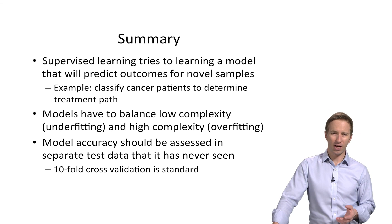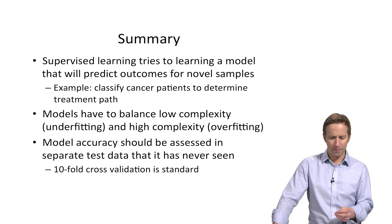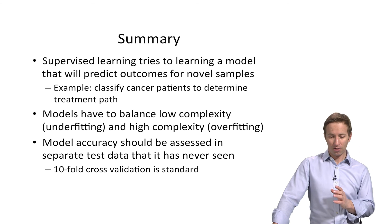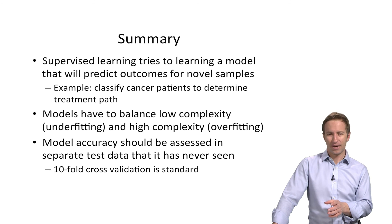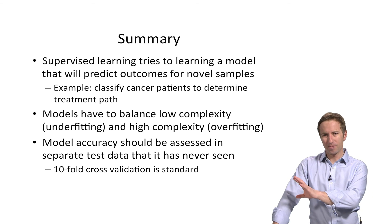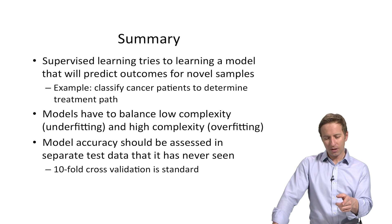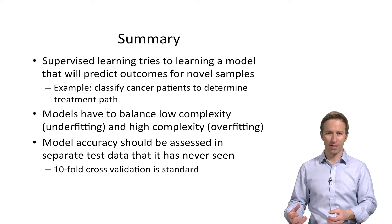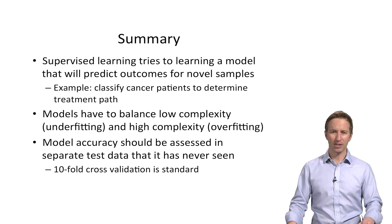And then finally, the accuracy should be assessed always in a separate test data set that it has never seen. Tenfold cross validation is the most common way of doing this. I showed you five fold as an example, cause it was easier to picture on a slide. But you want to be very careful that you're always showing the accuracy estimates where the model, when it was choosing its parameters, never saw the holdout data. When you're using the supervised learning methods in Chime, you don't have to worry about the nested cross validation because they don't do any tuning. There's a model that's in there called random forests, which we'll see in the next video.